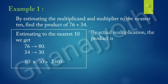Now, by actual multiplication, the product is 76 into 34 is 2,584.